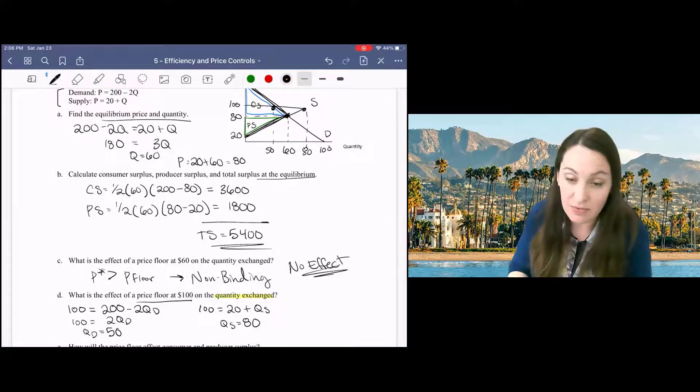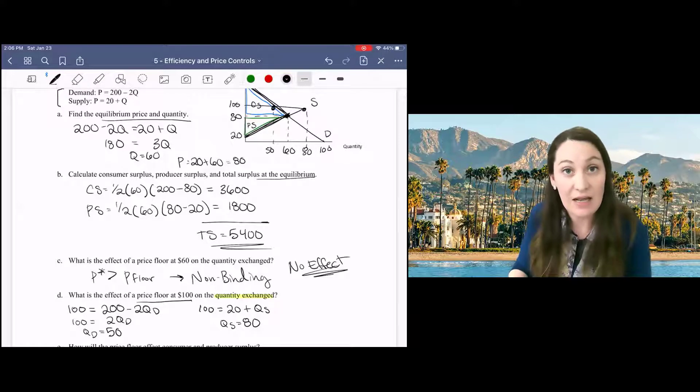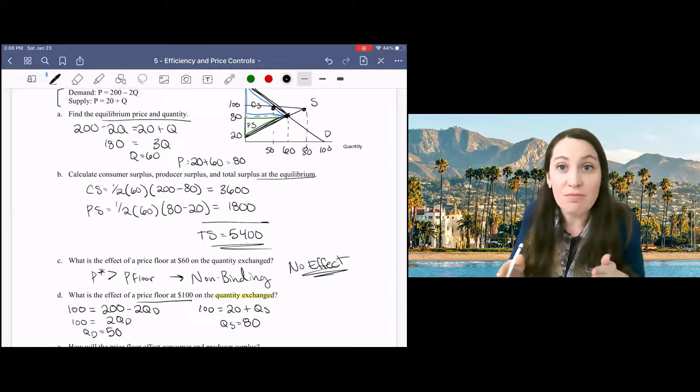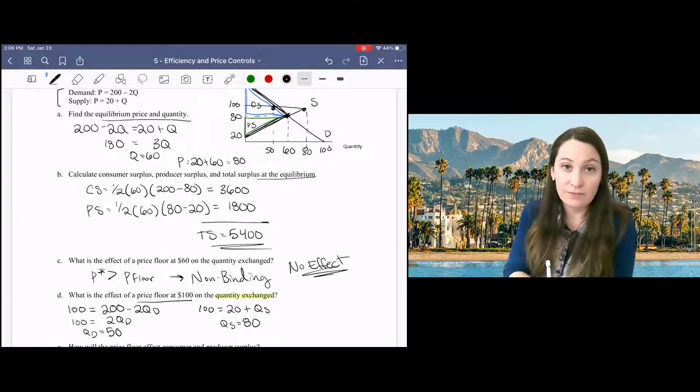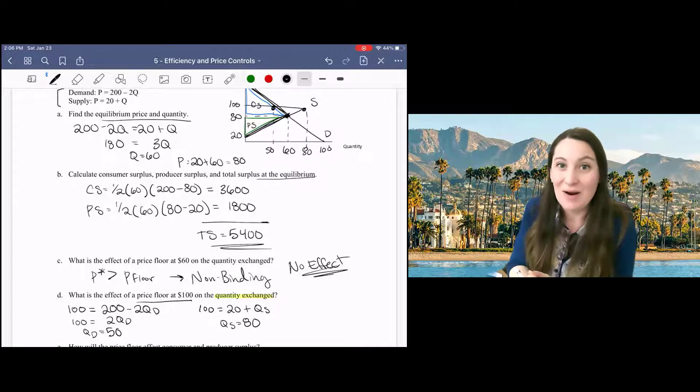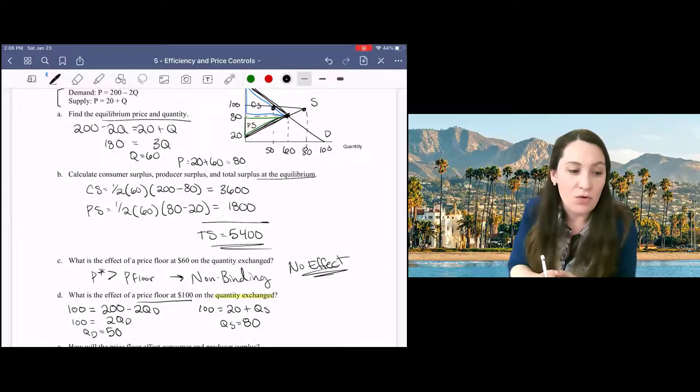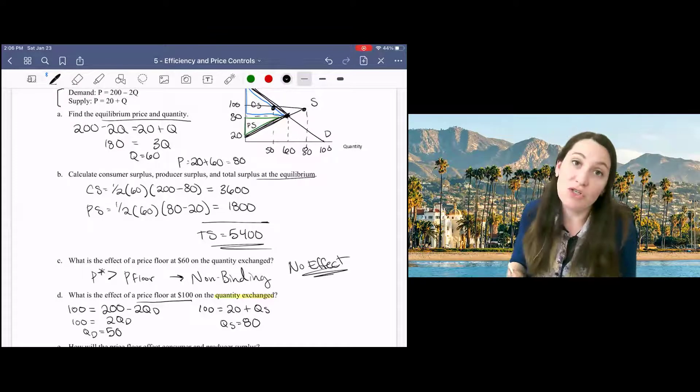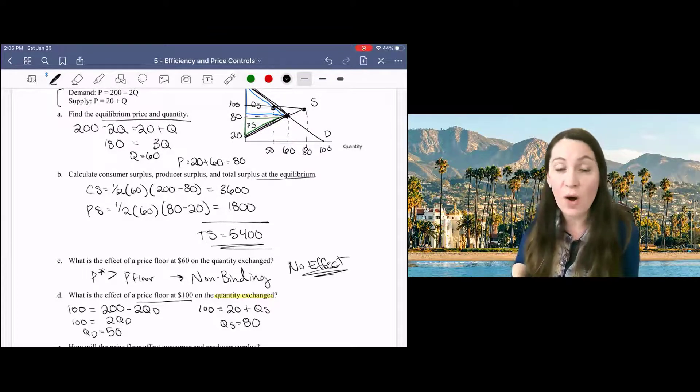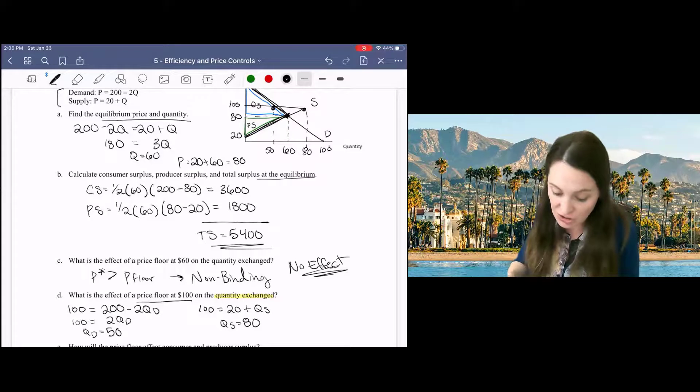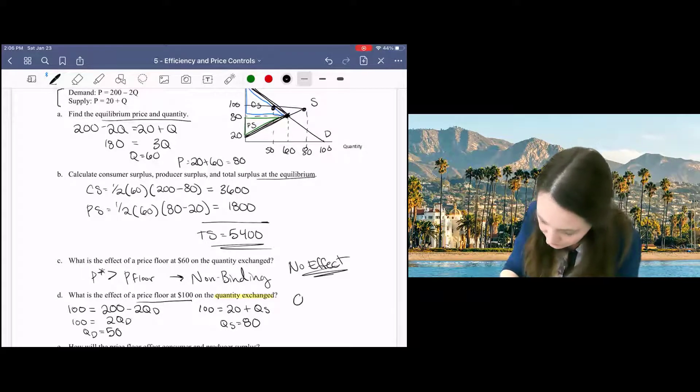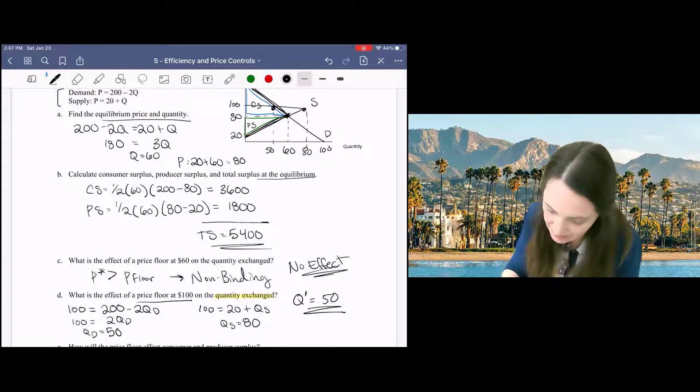If 50 people want to purchase the good and there are 80 units for sale, how many trades will actually occur? Remember that trade must always be mutually beneficial. Just because you have something for sale doesn't mean someone's going to buy it. So, the lower of these two quantities will always be the quantity that's actually exchanged in the market. So, our new quantity that's being exchanged here will be 50.